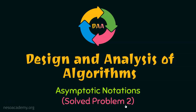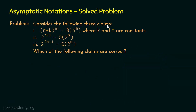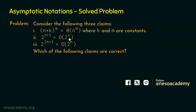Let's discuss Solve Problem 2 on Asymptotic Notations. Consider the following three claims. Claim 1: (n + k)^m is Θ(n^m), where k and m are constants. Claim 2: 2^(n+1) is O(2^n). Claim 3: 2^(2n+1) is O(2^n). Which of the following claims are correct?